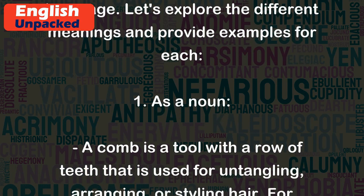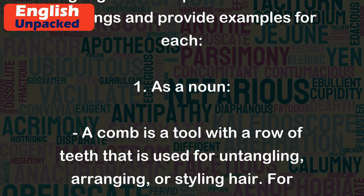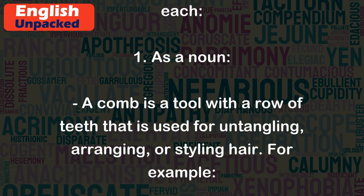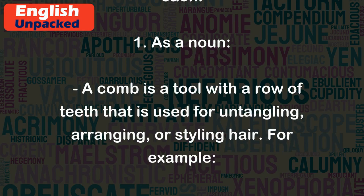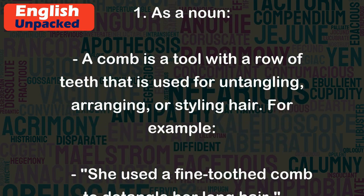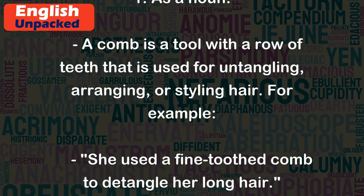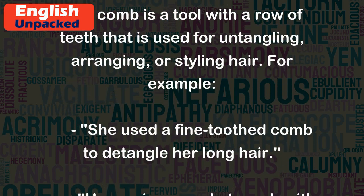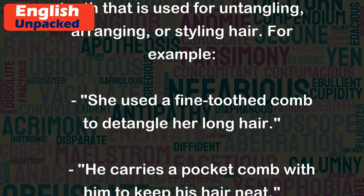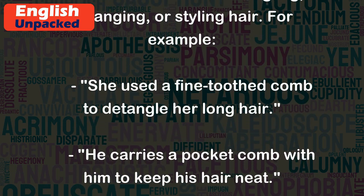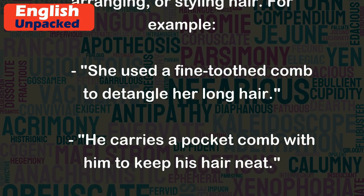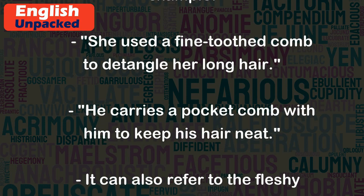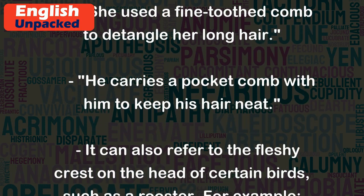As a noun, a comb is a tool with a row of teeth that is used for detangling, arranging, or styling hair. For example, she used a fine-toothed comb to detangle her long hair. He carries a pocket comb with him to keep his hair neat.